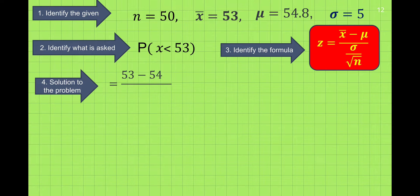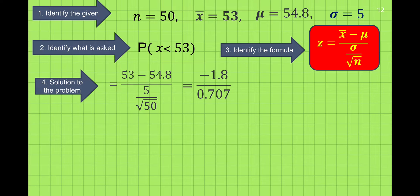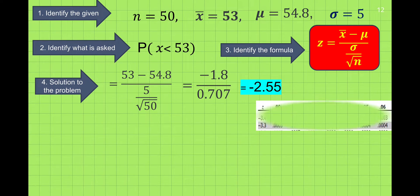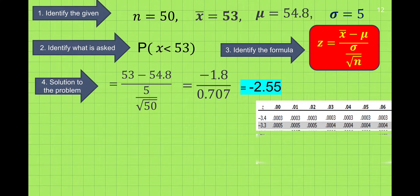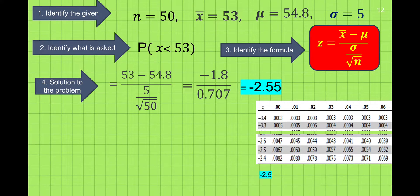Substitute the value of the mean, which is 53, and the population mean is 54.8, divided by the standard deviation which is 5, divided by the square root of n which is 50. 53 less 54.8 is negative 1.8, and 5 divided by the square root of 50 is equal to 0.707. Then divide negative 1.8 by 0.707, that's equal to negative 2.55. We find the value of negative 2.55 in the z-table: locate negative 2.5 and 0.05, wherein the value of negative 2.55 is equal to 0.0054.